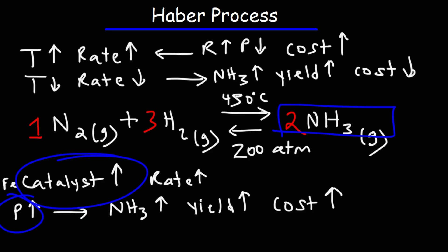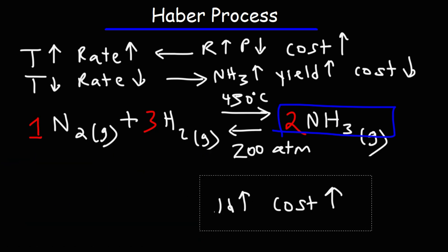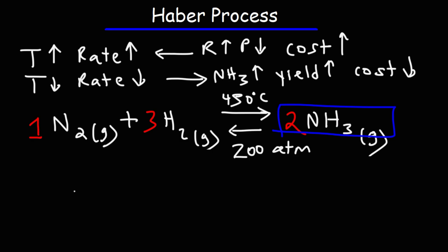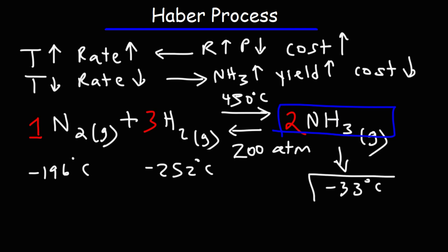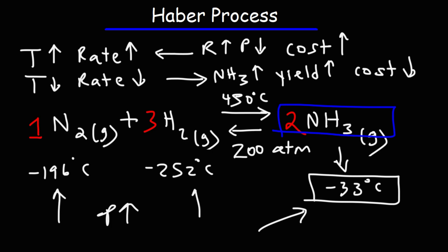Now how can we separate ammonia from nitrogen and hydrogen gas? In order to make this process useful, you need a way to separate ammonia from the reaction chamber. You could take advantage of the differences in boiling point. The boiling point of nitrogen gas is negative 196°C, and for hydrogen gas it's negative 252°C. But for ammonia, it's negative 33°C. If you increase the pressure, you can condense ammonia from a gaseous form to a liquid form. The fact that ammonia has a much higher boiling point than nitrogen or hydrogen makes it easier to separate it from the reaction chamber.